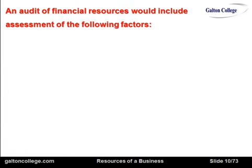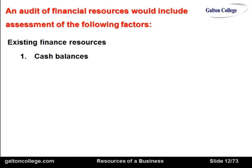An audit of financial resources would include an assessment of what resources the business currently has access to. These could be cash balances, which need to be managed carefully — too much cash sitting idle may mean missing out on a higher rate of return in a near-liquid asset that can easily be converted to cash. The management of cash balances is therefore important.